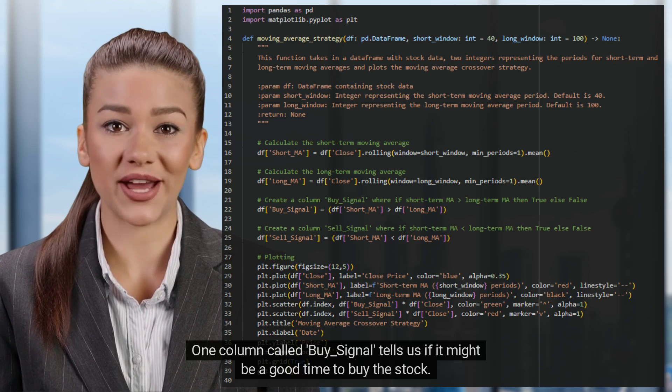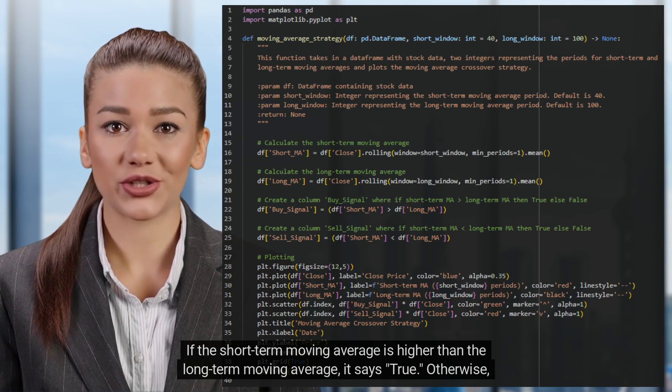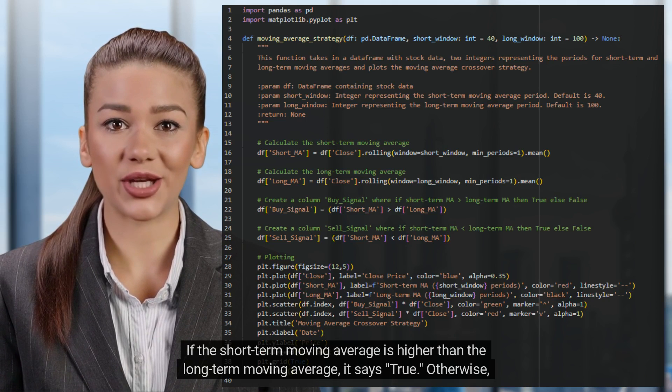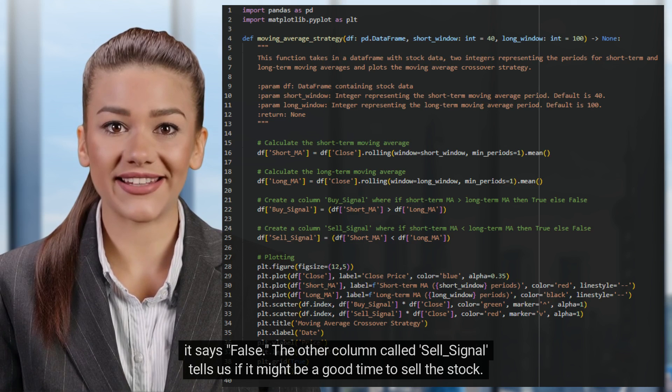One column called buy_signal tells us if it might be a good time to buy the stock. If the short-term moving average is higher than the long-term moving average, it says true. Otherwise, it says false.